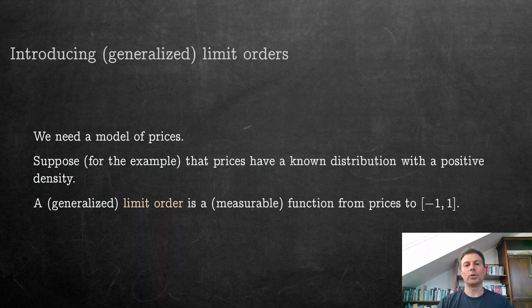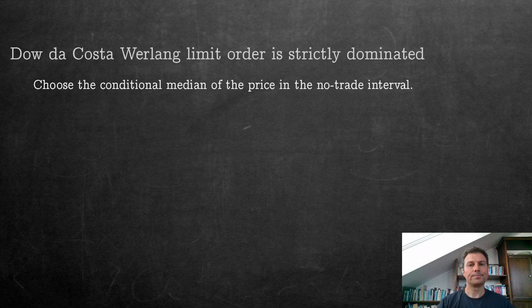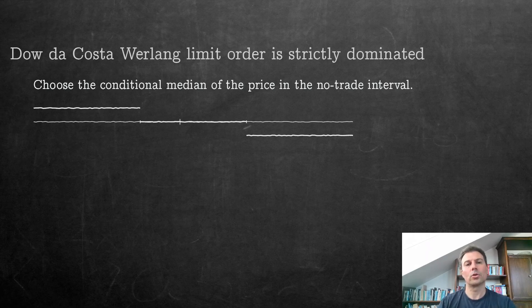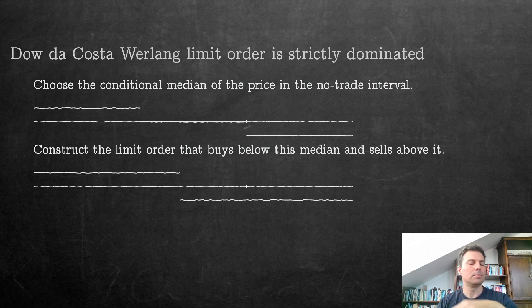So what's the limit order then? Or let's say in our paper, a generalized limit order is just a measurable function from prices to purchasing decisions. And now I'm going to argue that this Dow and Werlang limit order is strictly dominated. How do we do this? This is the Dow and Werlang limit order, or Dow and Werlang demand function. And now what dominates it? Take the point in the middle of this interval, in the middle, in a sense, probabilistically. Take the conditional median of the price, given that the price falls into this no-trade interval, and then construct the limit order that buys all the way up to this median and sells below this median.